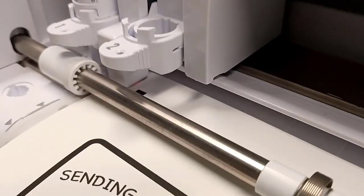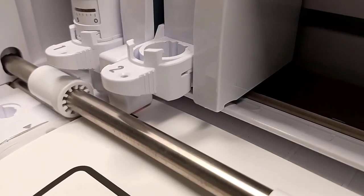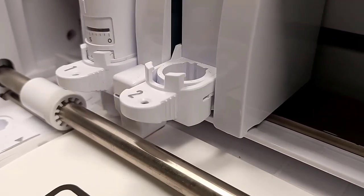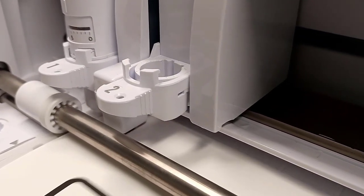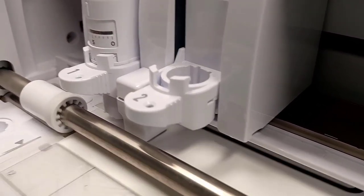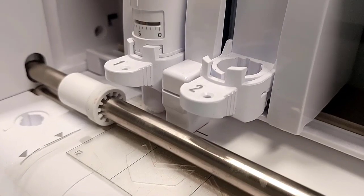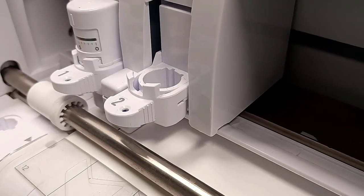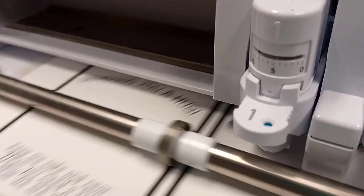So it is looking for those black marks in a very specific area, and it's measuring those marks. So if you decrease those registration marks, or your design is within that crosshatched area—that's the safety zone of the print and cut—the machine can have a hard time finding those marks accurately.